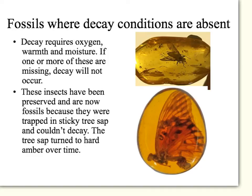Even though the conditions might have been warm, bacteria could not get to that insect to decay it. So instead, it's been preserved and the tree sap has hardened into a substance that we call amber, which is used for jewelry.